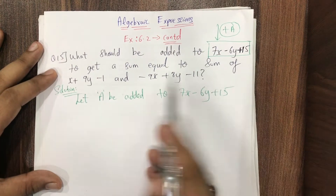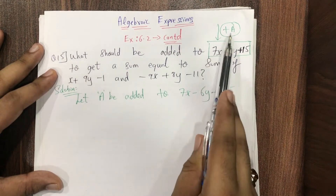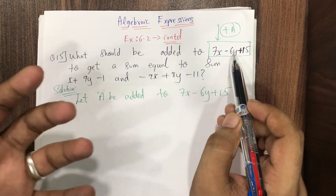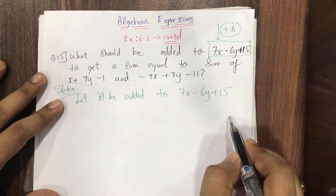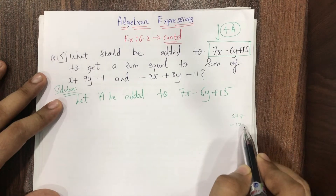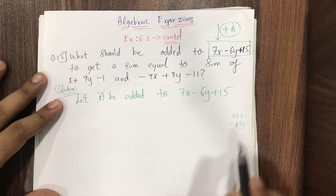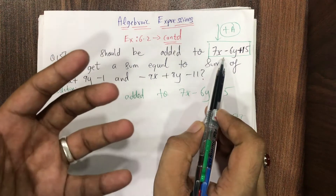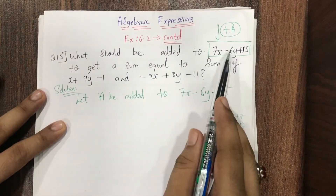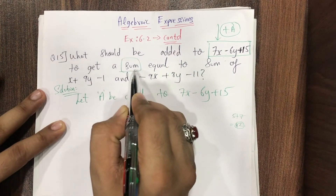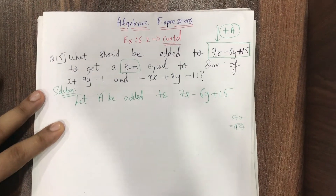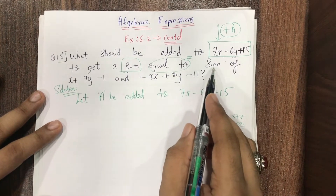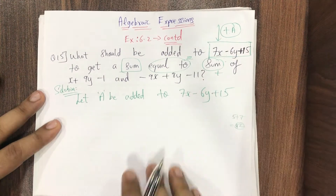So we are adding capital A to the polynomial. When we add capital A to this expression, the result is called the sum. For example, if we add 5 to 7, the answer 12 is called the sum. Similarly, when capital A is added to this polynomial, the answer is called the sum — and that sum should be equal to the sum of the two given expressions.